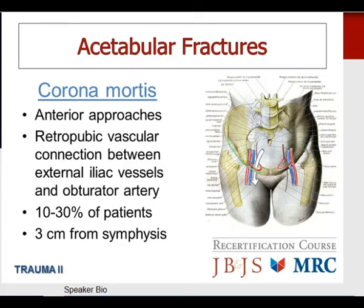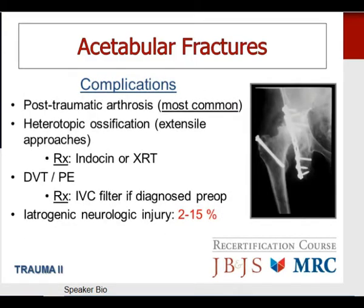Complications of acetabular fractures: post-traumatic arthrosis is by far the most common. Heterotopic ossification is much more common with the extensile approaches and also with the Kocher-Langenbeck posterolateral approach. Prophylaxis for HO is either indomethacin or radiation therapy — both have been shown to be equally effective. Thromboembolic complications are significant with these injuries; if a patient is diagnosed preoperatively with a thromboembolic complication, they should be treated with an IVC filter preoperatively. Iatrogenic neurologic injury ranges from 2 to 15 percent.